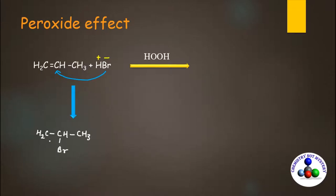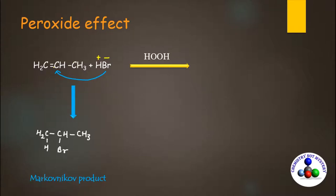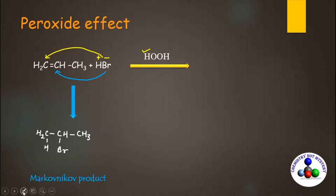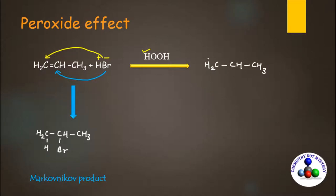But when you add HBr to propene in the presence of peroxide, the nucleophile gets attached to the sp2 carbon that has more hydrogens. That means Br gets attached to the terminal carbon, giving CH₂Br-CH₂-CH₃, and hydrogen gets attached to the middle carbon — that's how you get the anti-Markovnikov product.